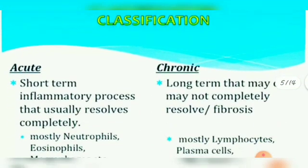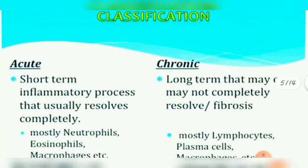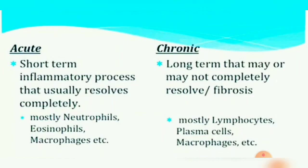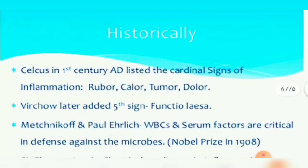Acute inflammation is a short-term inflammatory process that usually resolves completely. Chronic inflammation is long-term and may or may not completely resolve. The main cells involved in acute inflammation are neutrophils, eosinophils, and macrophages. In chronic inflammation, the main cells are lymphocytes, plasma cells, and macrophages — macrophages being involved in both.